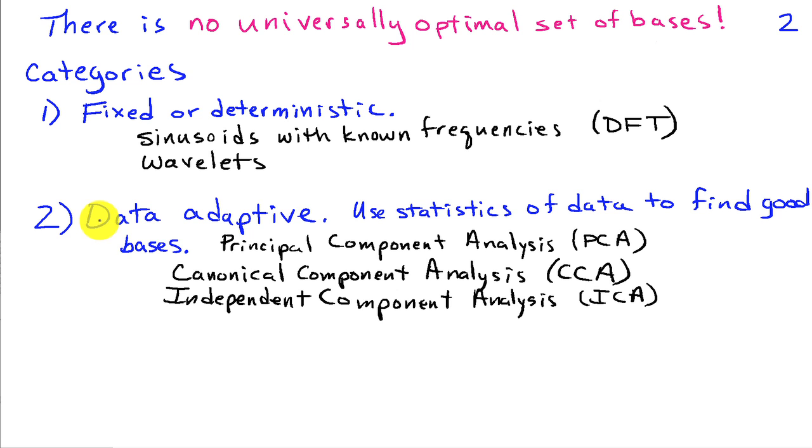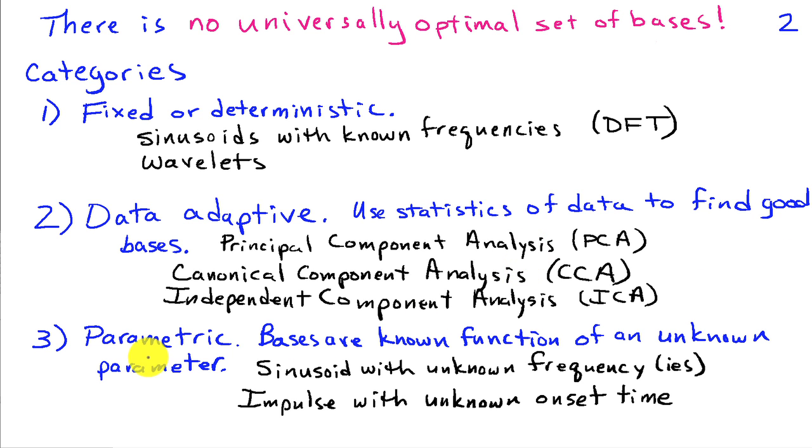There's another category of basis functions, and those are what I'm going to call data adaptive. In this case, we're going to use observations of our data and statistics we compute from them to find a good set of bases. Examples of this include principal component analysis, canonical component analysis, and independent component analysis. All of these methods use the statistics of the data to find a set of bases that are optimum with respect to a certain criteria. And then the third category is what I'm going to call parametric bases. In this case, we know the functional form of the basis signals, but they just might depend on some unknown parameters.